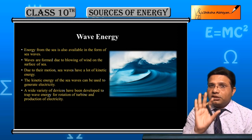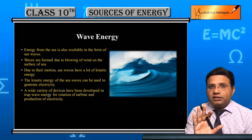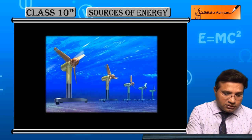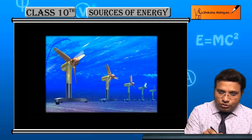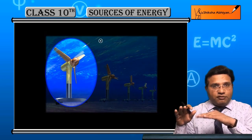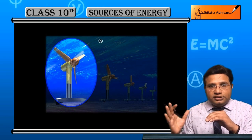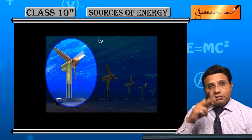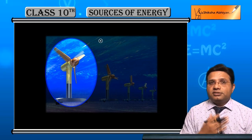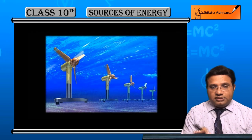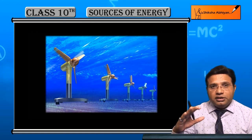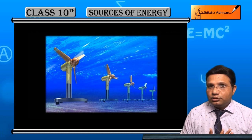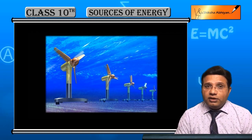On the surface of the waves, the turbine will rotate, and this is connected to a generator which will generate electricity. These devices work from the surface of the waves — the turbine rotates, which then generates electricity. So this was the energy from the waves, or wave energy.